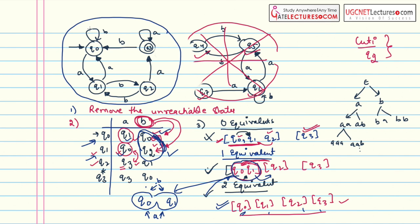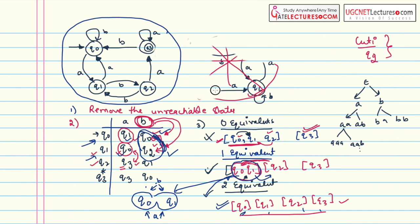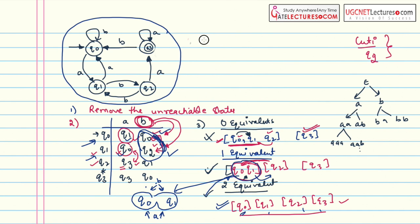With length-two strings we can differentiate between all states, so all states q0, q1, q2, and q3 are important and cannot be minimized further. The redundant states (q4–q7) can be removed. The complete DFA can be minimized to only this smaller DFA with states q0, q1, q2, q3. Let me take a few more examples to solve such problems.